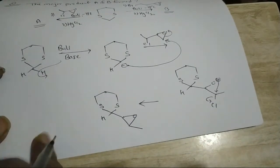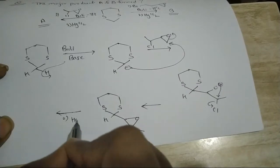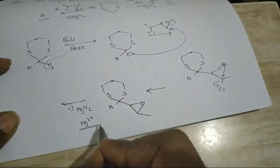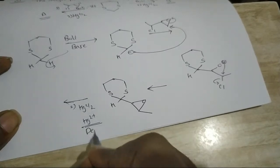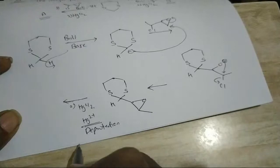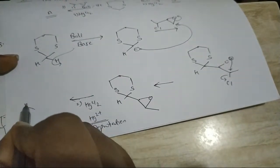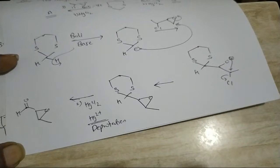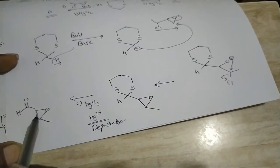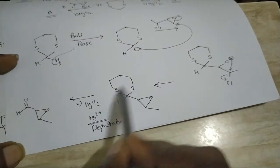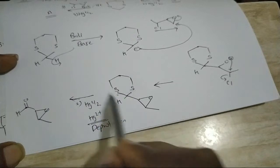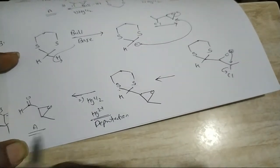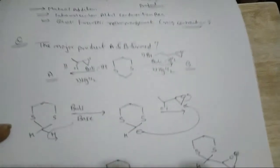After that, in the second step, we are given HgCl₂, which means it is in the Hg²⁺ state. This is a deprotection of the dithiane, so we get a double bond to oxygen — which is our product A.